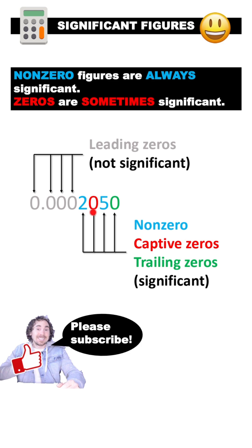Captive zeros come between non-zero digits. They're always significant. In other words, they're actually communicating the value of a zero.